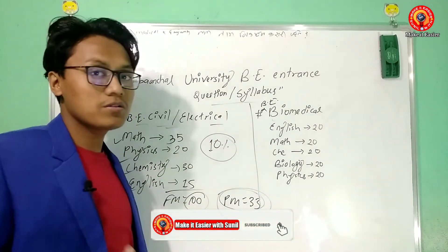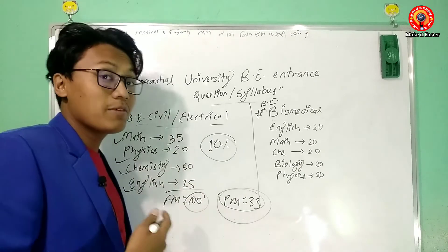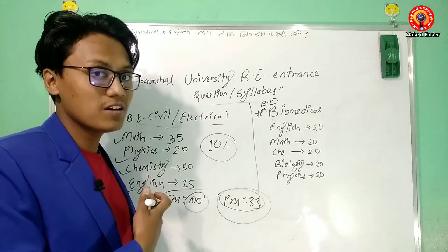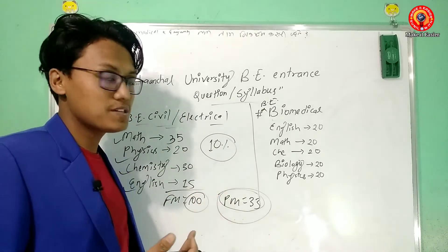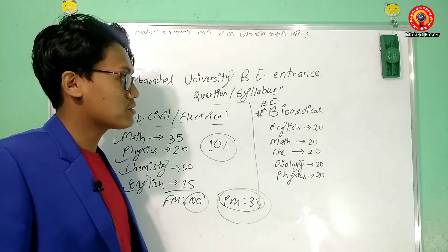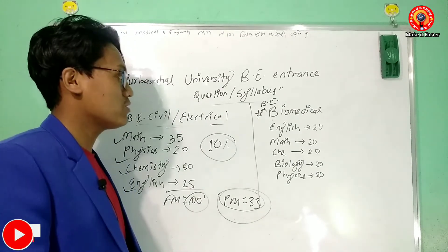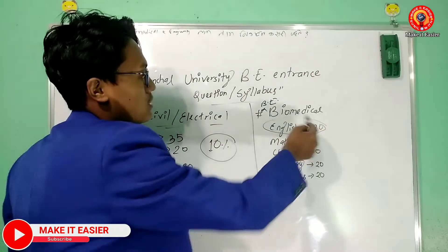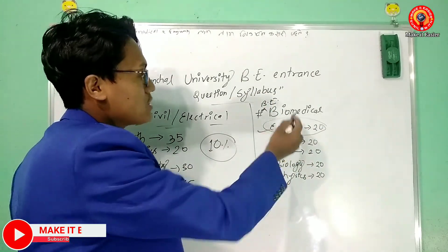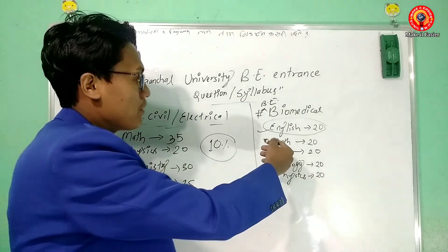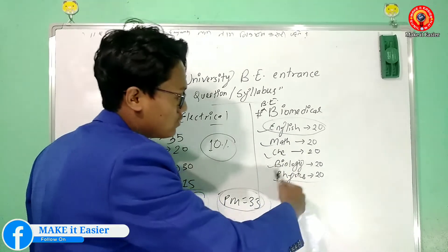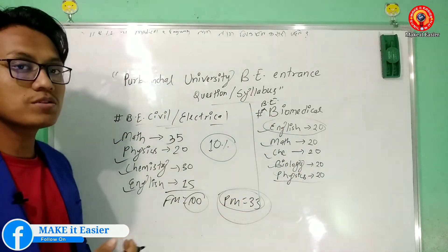Now we will discuss the B.E. Biomedical course. For B.E. Biomedical Engineering, the subject breakdown is: English — 20 marks, Math — 20 marks, Chemistry — 20 marks, Biology — 20 marks, Physics — 20 marks.